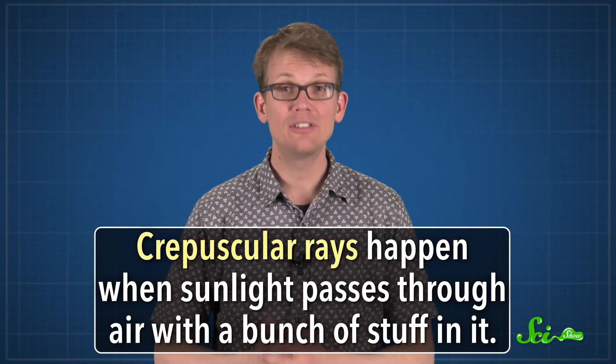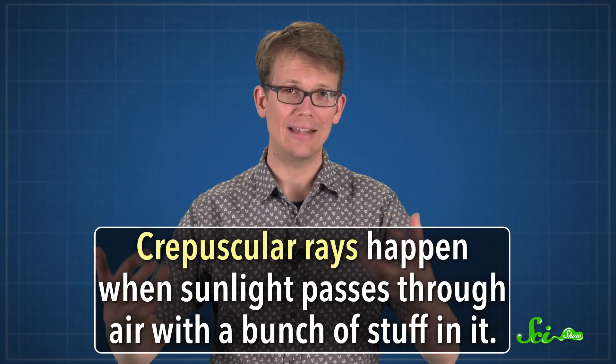Crepuscular rays happen when sunlight passes through air that has a bunch of stuff in it. Sunlight is always bouncing off of stuff in the air. The way it bounces depends on what it's hitting. Nitrogen in the air, for example, scatters the bluer parts of the sun's light, which is why the sky is blue.